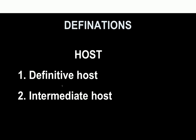Next are the hosts. Hosts are organisms that harbour the parasite; they provide nourishment and shelter to the parasite and are generally larger than the parasite. Two types of hosts have been identified: definitive hosts, which harbour the adult or sexual form of the parasite, and intermediate hosts, which harbour the larval or asexual form. Intermediate hosts can be more than one — there can be a first intermediate host or a second intermediate host.